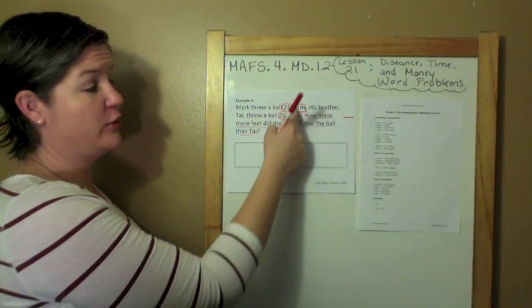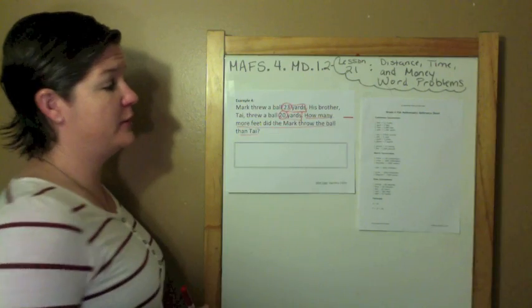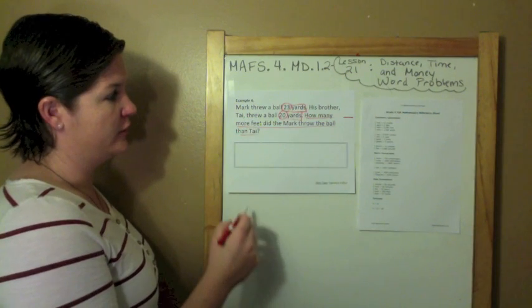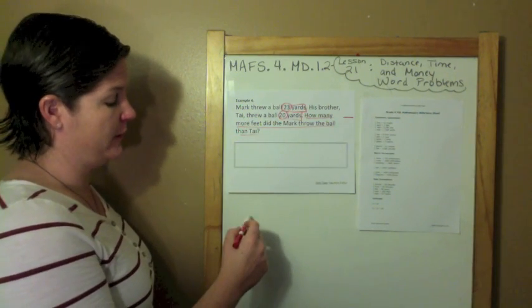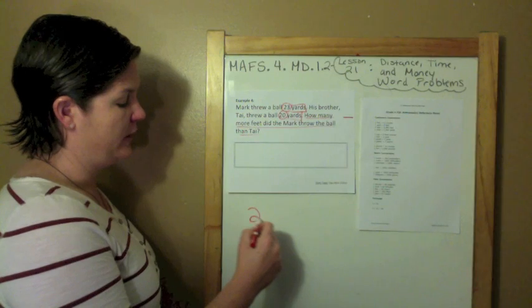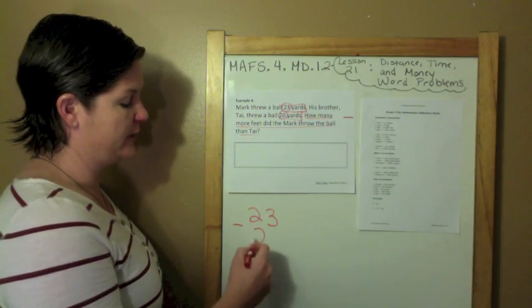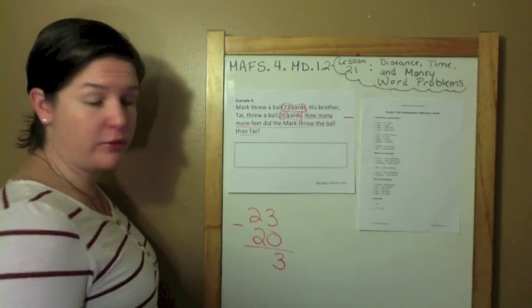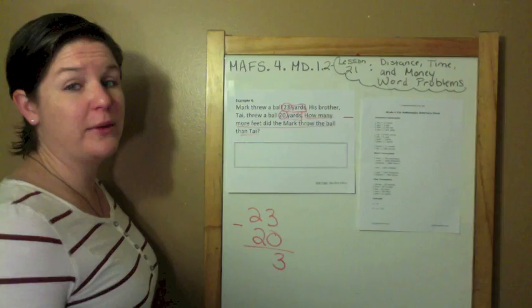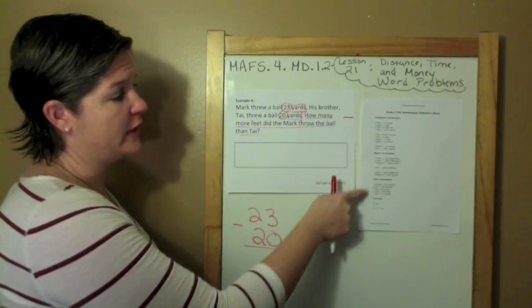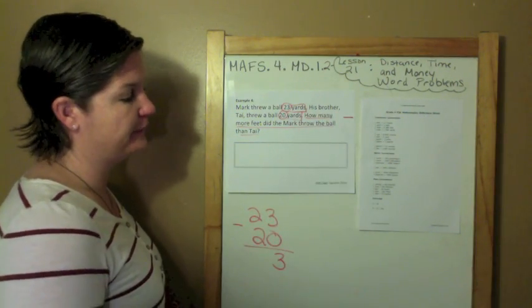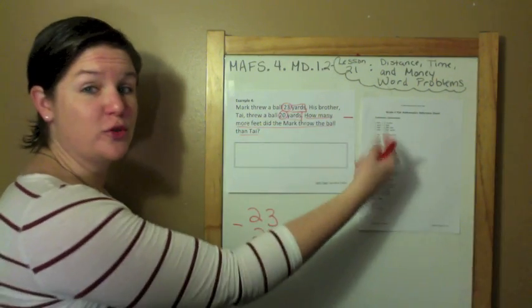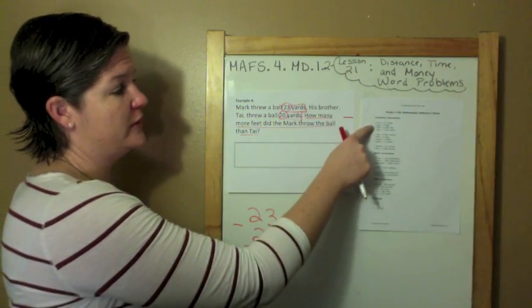How many more means we need to subtract. This is not a typo. I did mean feet, because here we have the units yards, but eventually we need to convert it to feet. We're finding how many more feet Mark threw it. Let's start with what we know about the yards. Mark threw it 23 yards and we're subtracting what Ty threw. 23 minus 20 is 3. But now we need to figure out how many feet. Over here on the reference sheet, which you will receive on the test, we see that one yard equals three feet.